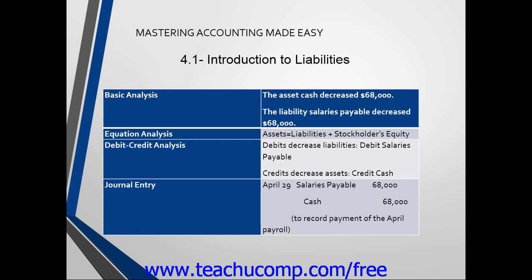The first step is the basic analysis. We see that the asset cash decreased by $68,000 while the liability salaries payable decreased $68,000. Since a liability and an asset both decreased, our equation will still balance.